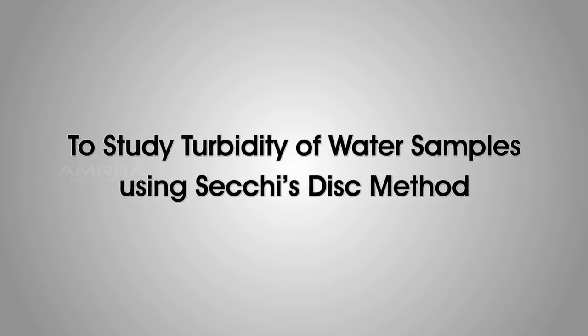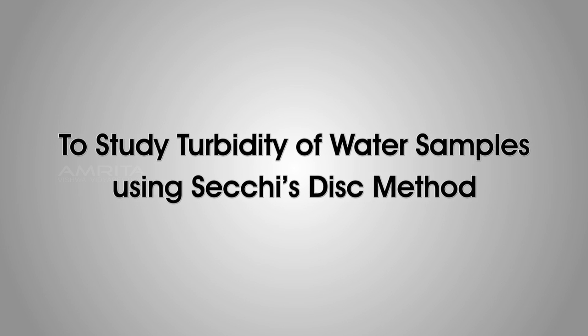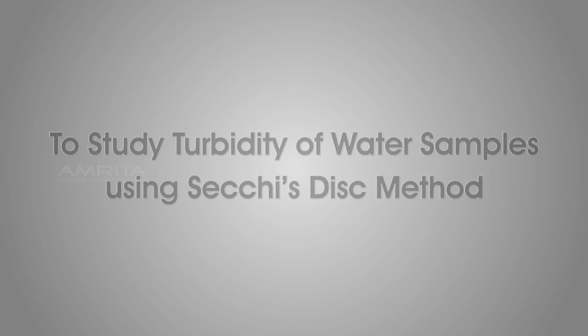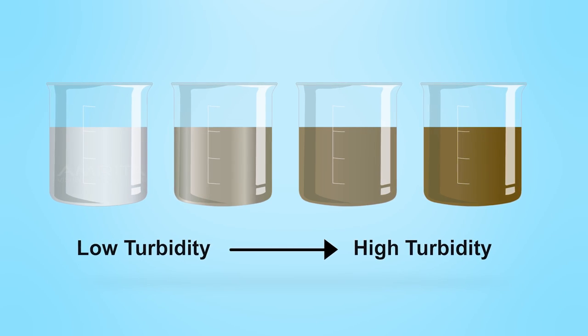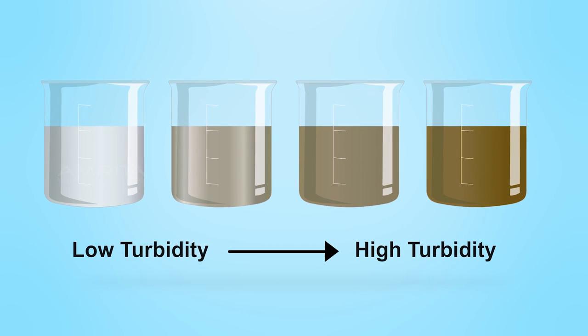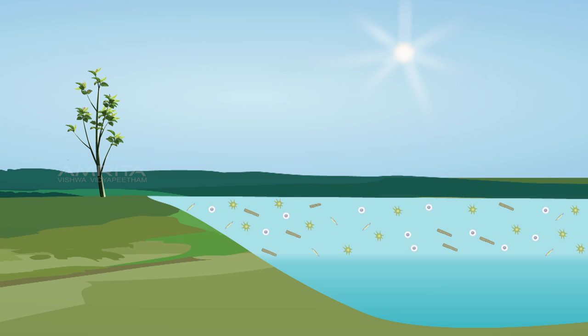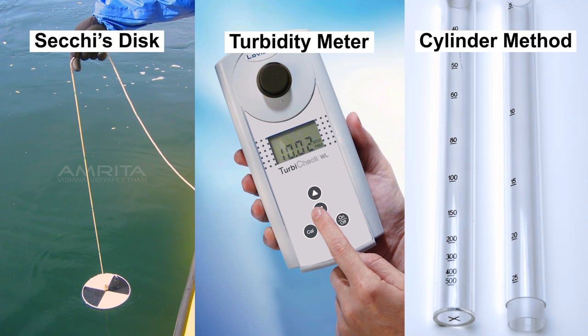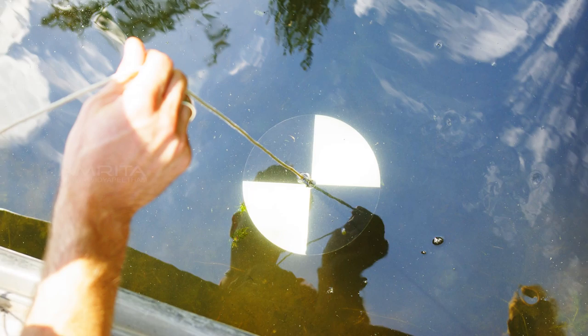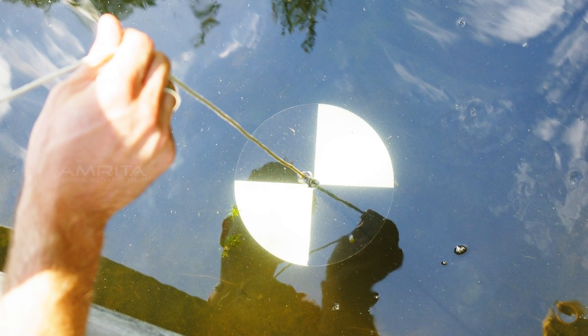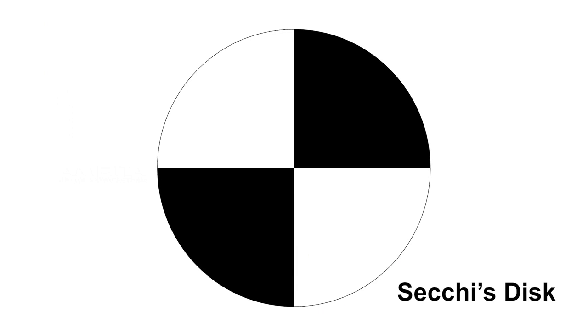To study the turbidity of water samples using Secchi's disk method. Turbidity is the measure of the relative clarity of a liquid. Turbidity of the water body determines the depth to which light can penetrate and thus affects the distribution and photosynthesis of phytoplankton and microphytes. Turbidity can be measured using several methods. The easiest and least expensive method is through a Secchi's disk.